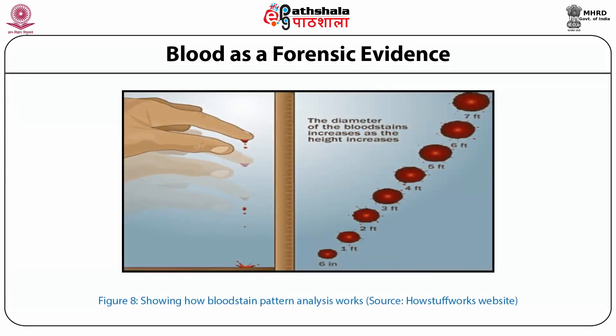Bloodstain pattern analysis: Often found at the scene of violent crime, the analysis of bloodstains can provide vital clues as to the occurrence of events. Venous blood will show fine droplets with a striking surface at right-angles, producing a star-like pattern. Arterial blood generally shows an oblique pattern due to pressure. The diameter of the bloodstain increases as the height of the fall increases.